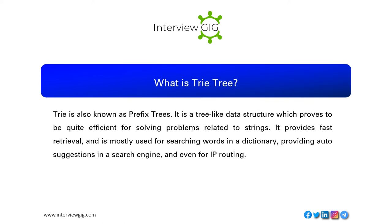What is a trie tree? A trie, also known as a prefix tree, is a tree-like data structure that proves quite efficient for solving problems related to strings. It provides fast retrieval and is mostly used for searching words in a dictionary, providing auto-suggestions in a search engine, and for IP routing.